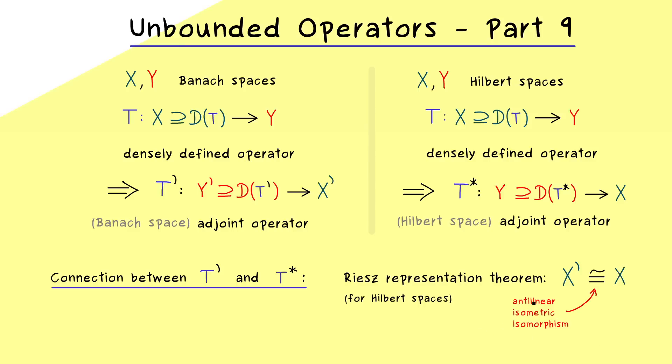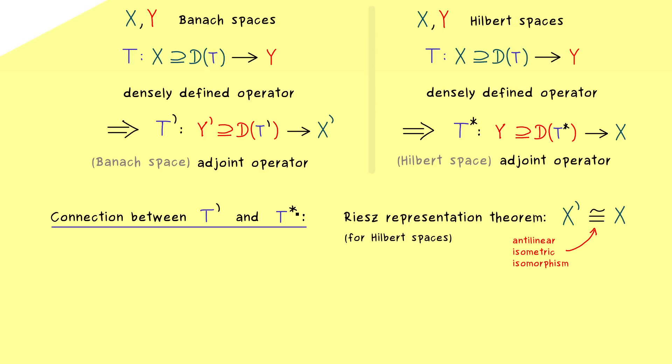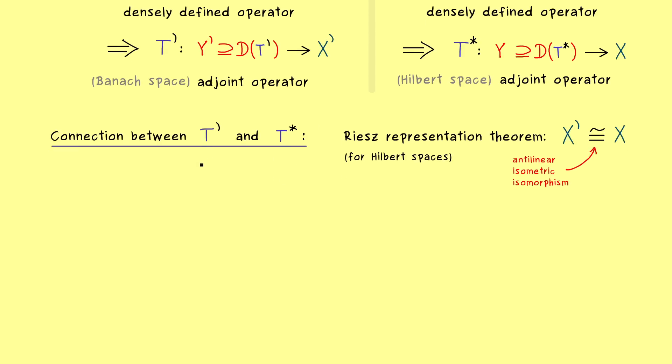And there antilinear means conjugate linear, so it only matters for complex Hilbert spaces. However, for these we have a complex conjugation involved, which we cannot just ignore. In fact, in examples you will always see this complex conjugation when we talk about T*, but not when we talk about T'.